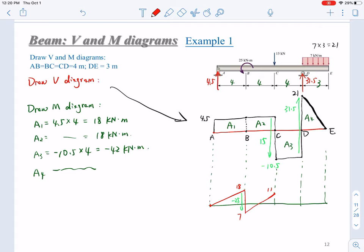Then from this 11, C to D, it will be down by A3. And A3 equals negative 42. So it will reach here. This will be 11 minus 42, it will be negative 31.